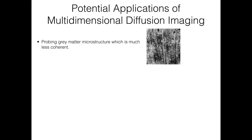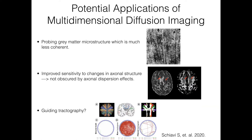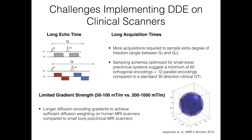People are excited about microscopic FA because it could be a good way to probe gray matter microstructure, which tends to be much less coherent. It's also a useful way to improve sensitivity to axonal structure, since you're less obscured by dispersion effects. There's also interest in using this information to guide tractography algorithms, incorporating microstructure information to make them more accurate and robust.